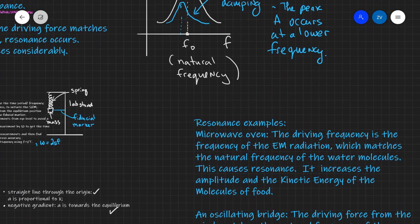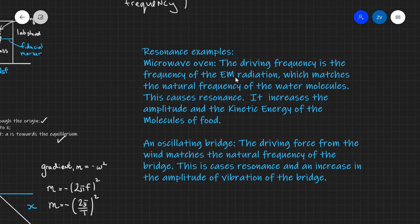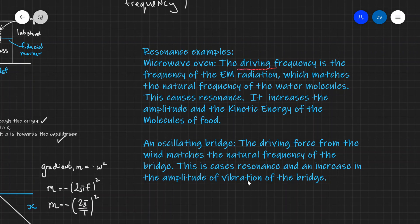Finally, let's look at some examples of resonance. In a microwave oven, the driving frequency is the frequency of the EM radiation, which matches the natural frequency of the water molecules, causing resonance and increasing the amplitude and kinetic energy of the food molecules. Another — problematic — example is an oscillating bridge: the driving force from wind or people walking could match the natural frequency of the bridge, causing resonance and an increase in vibration amplitude. In each case, identify the driving frequency, state that it matches the natural frequency, and note that this causes resonance and increases the amplitude.